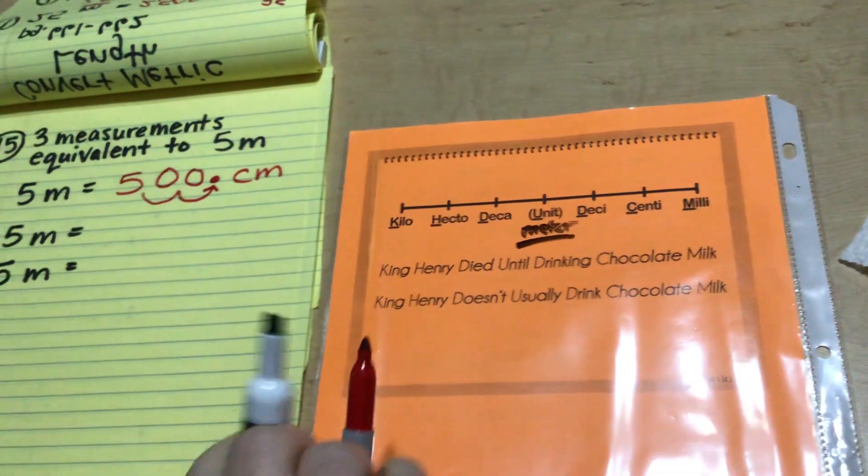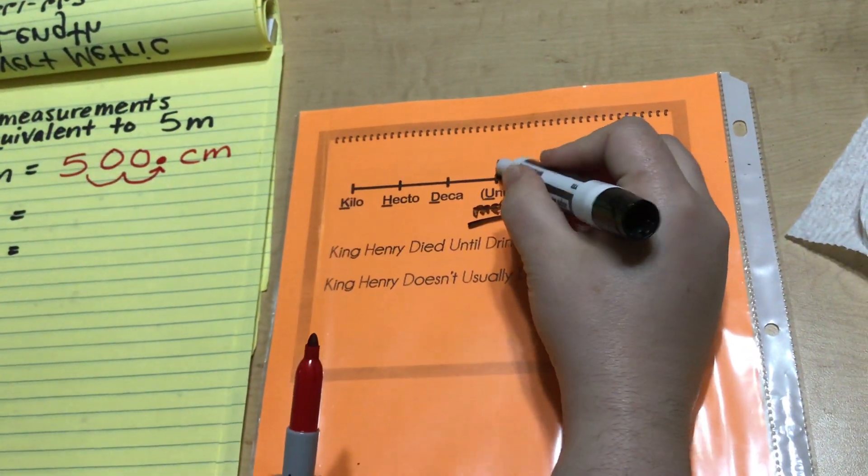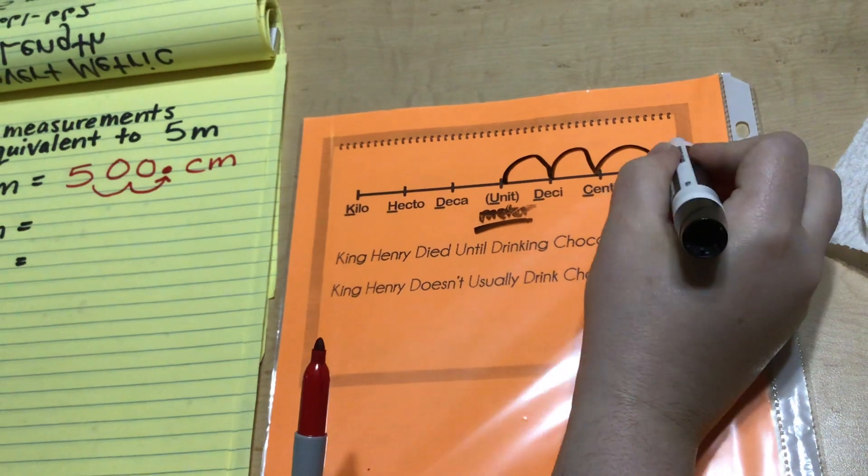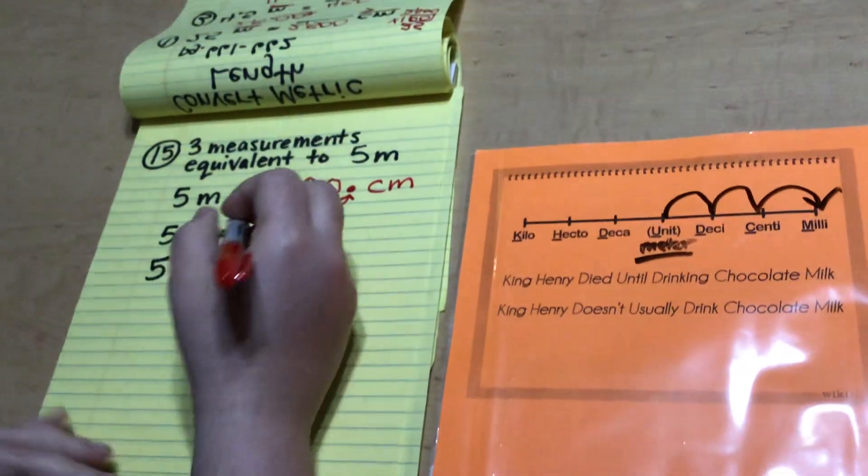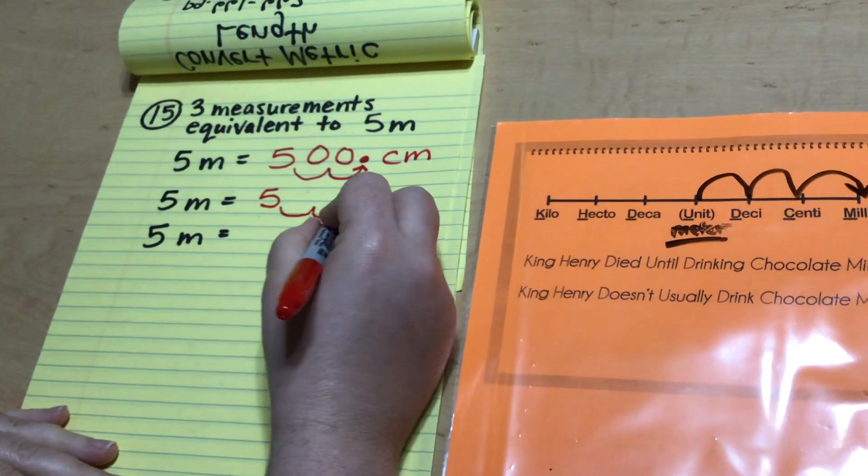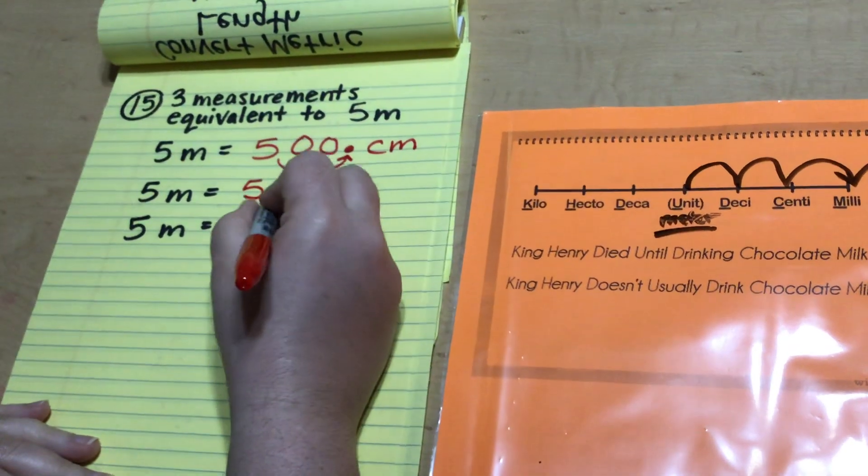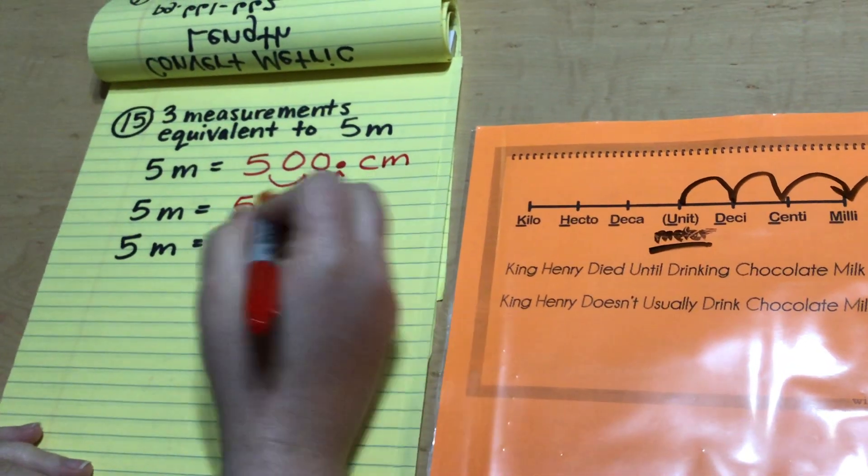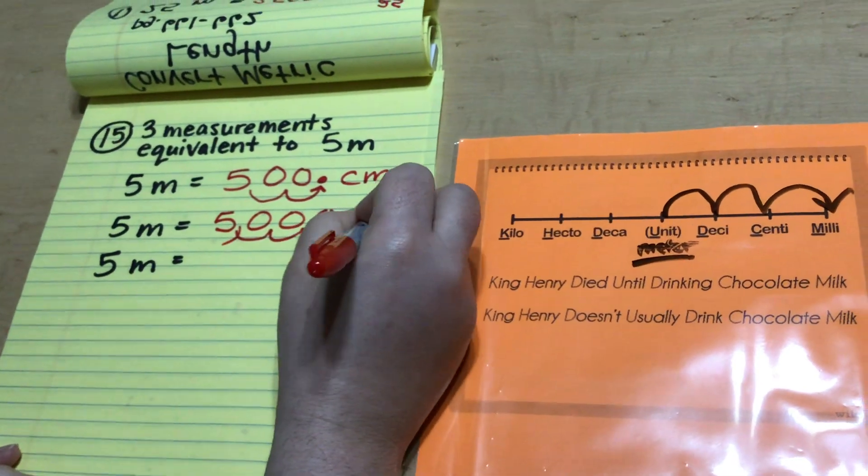Let's do another one. What if instead I did three jumps to the right? From meters, I go one, two, three jumps to the right. That gives me millimeters. So I would have my five. The decimal would be here and I'd say one, two, three jumps to the right. That's 5,000 millimeters.